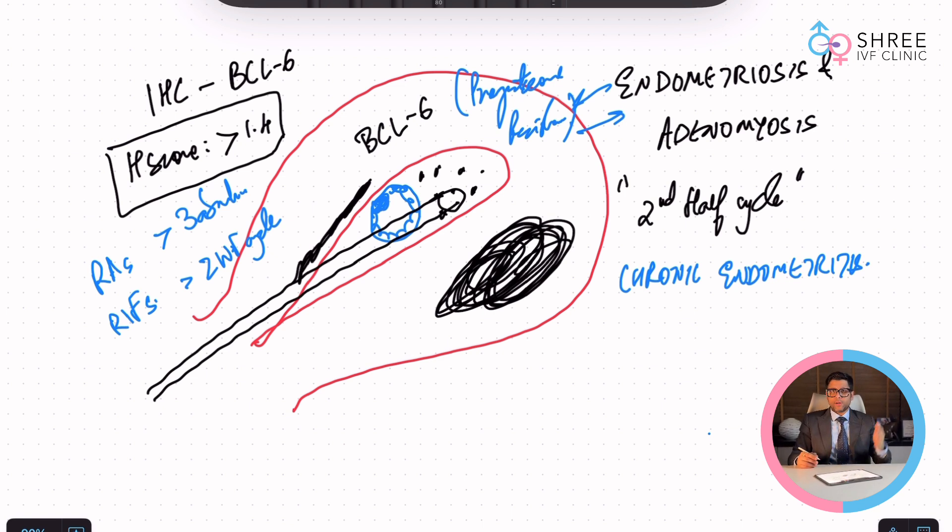You should see a good reproductive immune specialist. Let them go through your case in great detail because what we will do is we will also do a detailed ultrasound, not the routine ultrasound. A little expensive, but we will do that and once we do that we will give you an answer. And when we do BCL-6 for that, we come up with a calculation score.